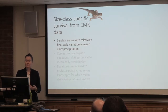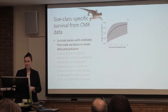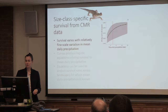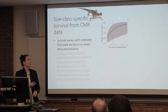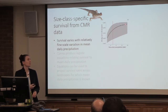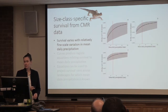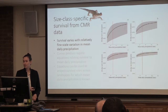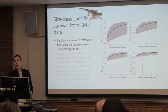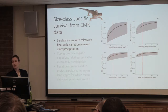We also allowed survival to vary with relatively fine-scale variation in mean daily precipitation. What this produced was these really nice logistic curves. The red line is the mean daily precipitation at the CMR sites. This particular curve is for hatchlings — you can see this logistic relationship, and if the place was wetter than our CMR sites, they might actually have higher survival than what we observed. This is the plot for juveniles, this for sub-adults, and this for adults. There's differential survival among size classes, and survival is increasing as mean daily precipitation increases.